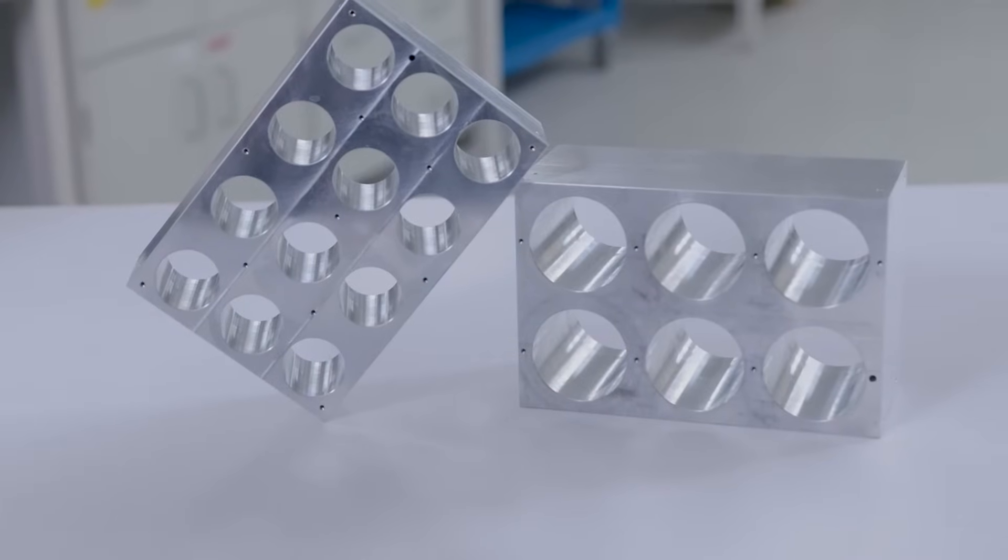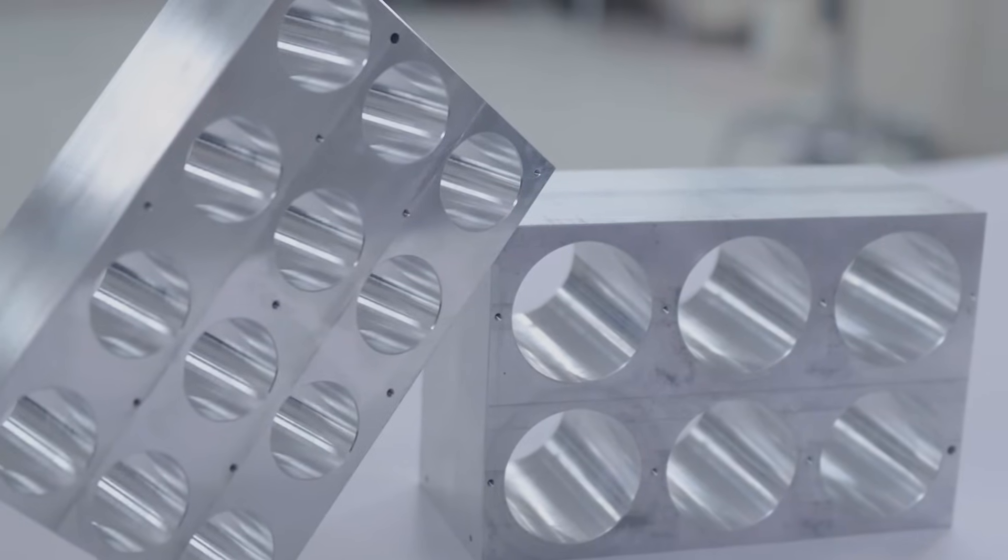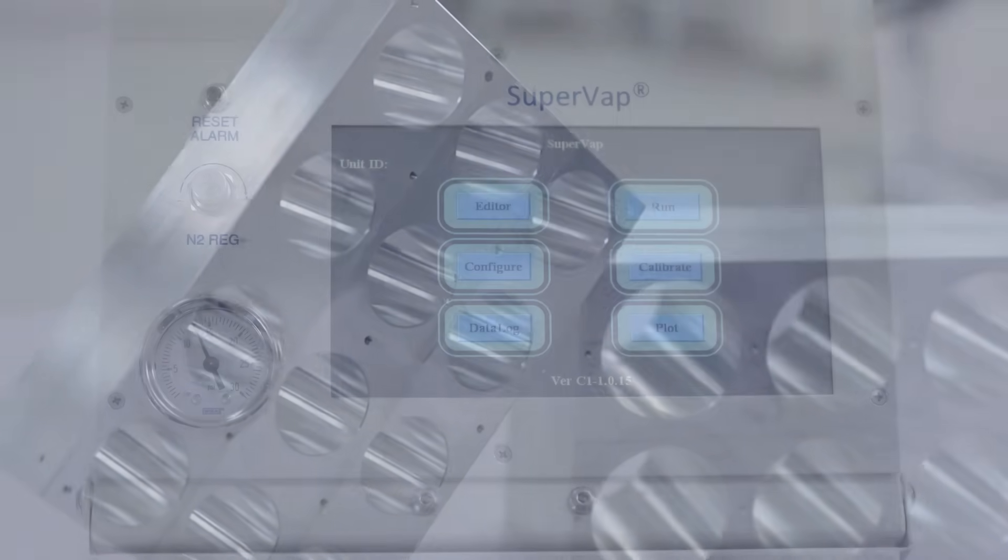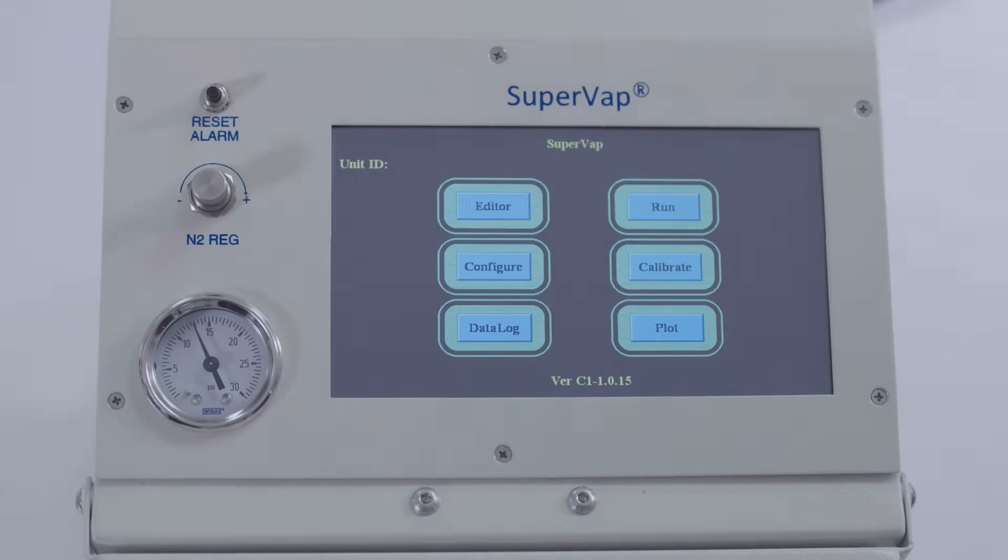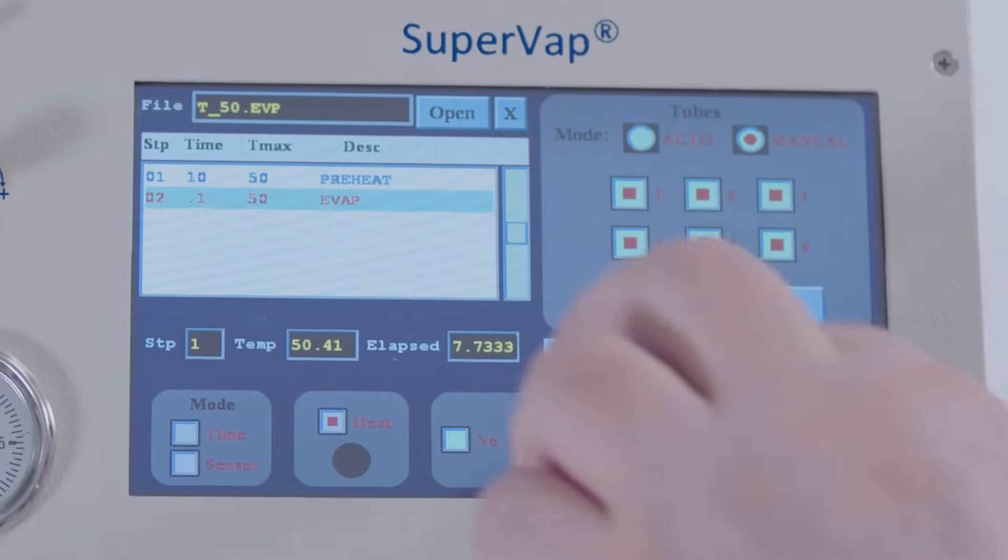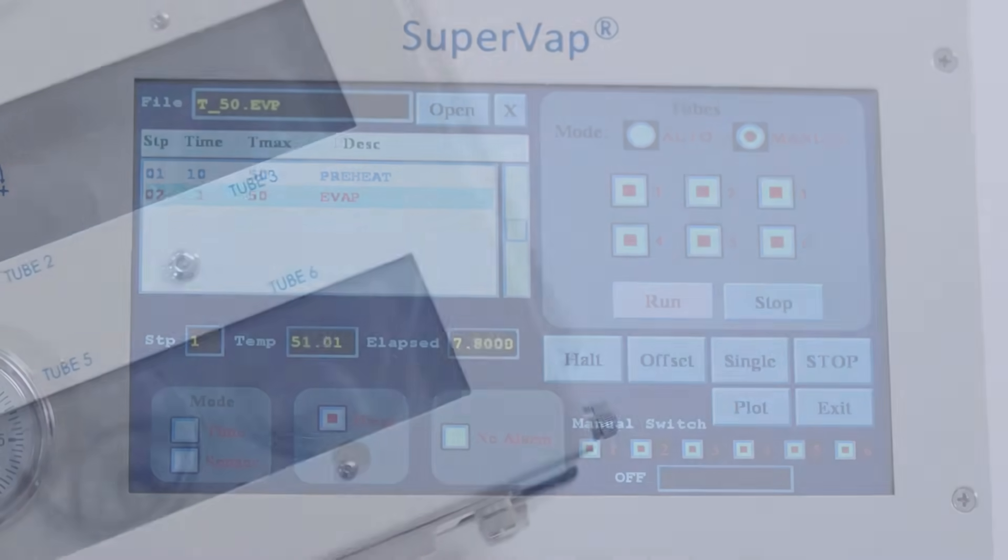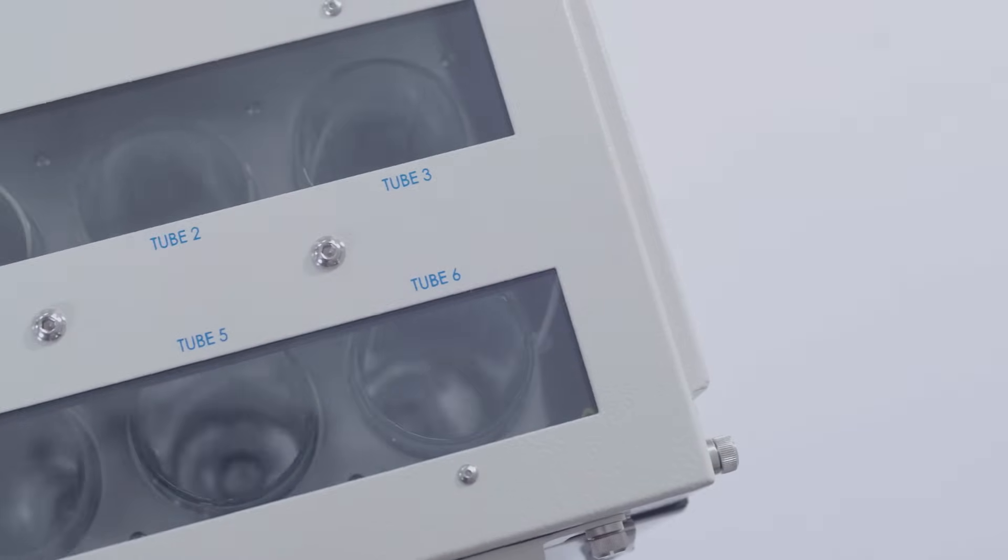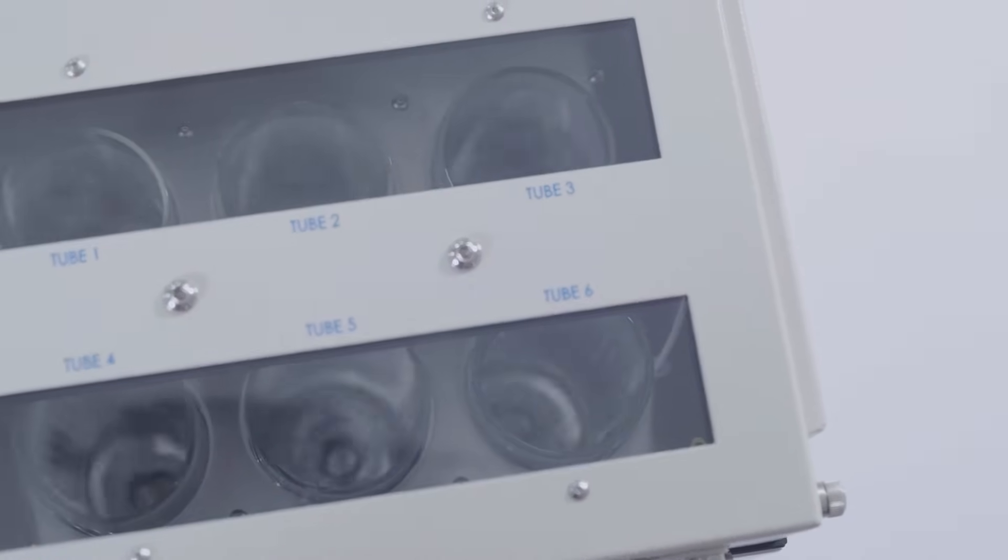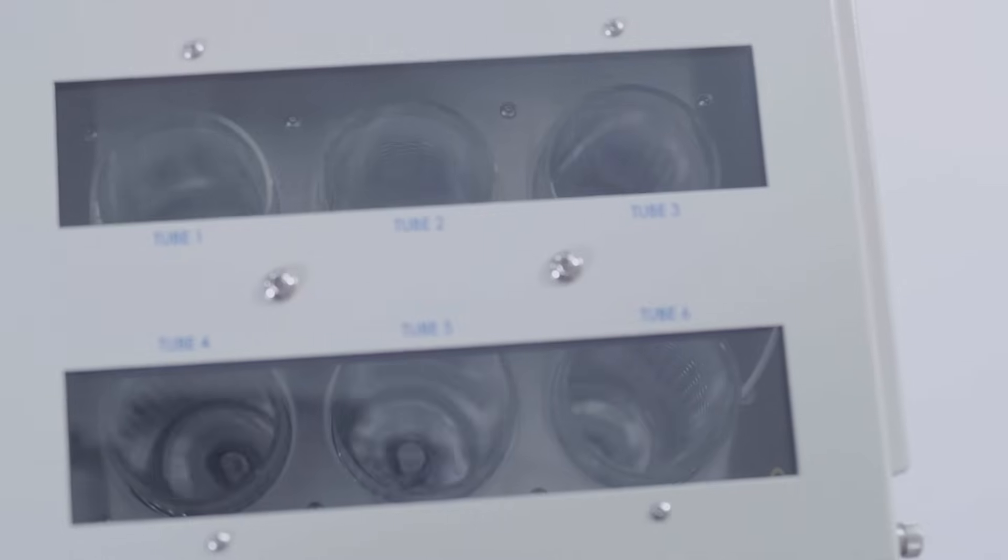The SupraVap concentrator is a dry, waterless system, which is programmable. It can preheat as well as ramp up to final temperature. It automatically senses the extract being delivered to each vessel, starts nitrogen blowdown, and shuts off nitrogen when the final volume is achieved.